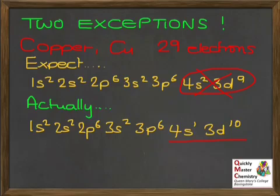This time, we've kind of stolen one of the 4S electrons instead of having a half full 3D to have a full 3D. So, instead of 4S2 3D9, we've only got 4S1 and we're using that extra electron to complete the 3D subshell. Again, this is particularly stable.